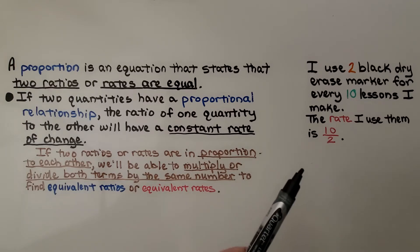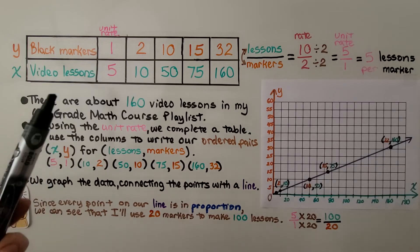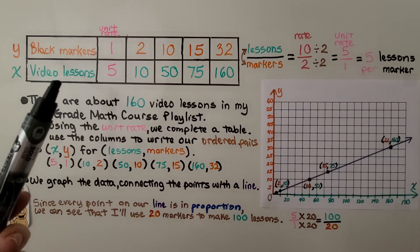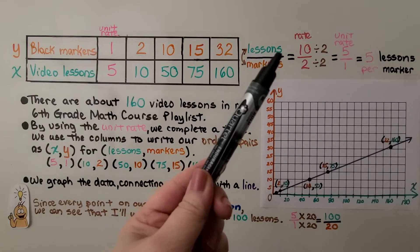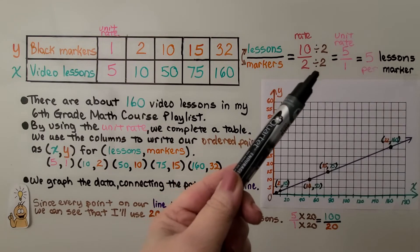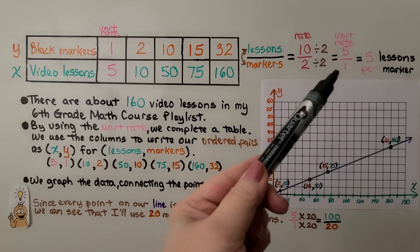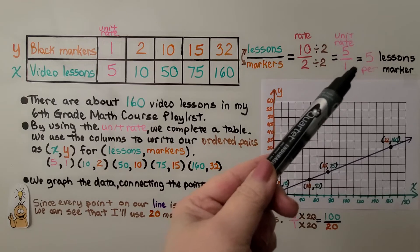Now, I use two black dry erase markers for every ten lessons I make. The rate I use them is ten to two - ten video lessons, two markers. So, we can make a table of values for black markers to video lessons. If I make ten lessons with two markers, we can find the unit rate by dividing them both by two, or doing ten divided by two, which is five. That means I make five videos and I use one marker. That's five lessons per marker.